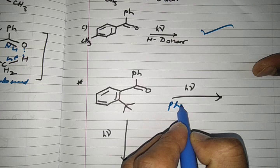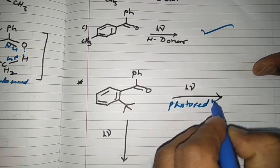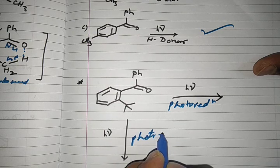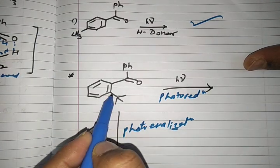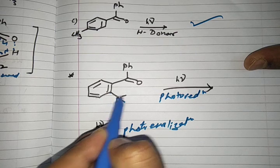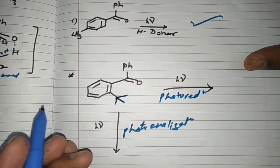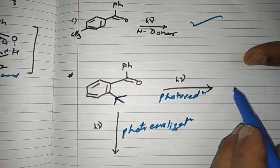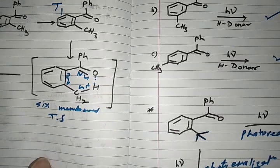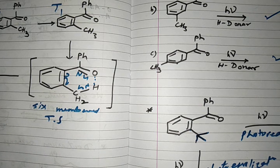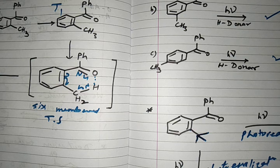Consider another example: if there is an ortho alkyl group present but no benzylic hydrogen at the benzylic carbon, what happens? Since the presence of benzylic hydrogen is required for photoenolization, without it the compound proceeds to photo reduction instead. In summary, compounds with an ortho alkyl group and benzylic hydrogen show photoenolization; all other carbonyl compounds show photo reduction.